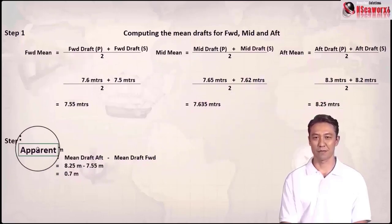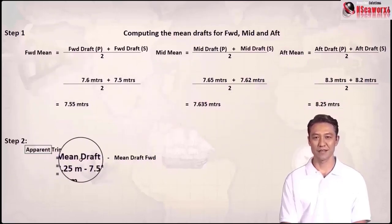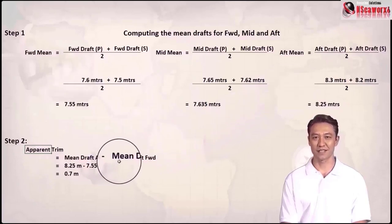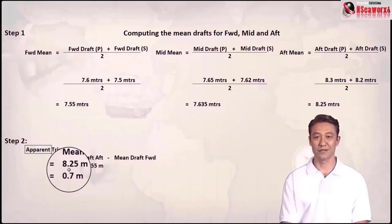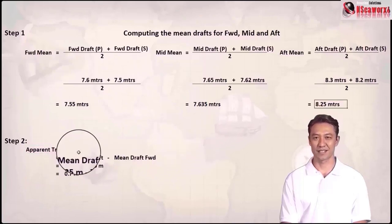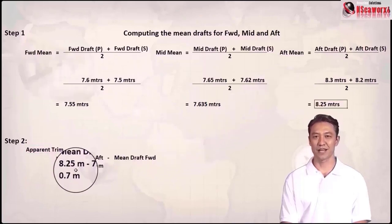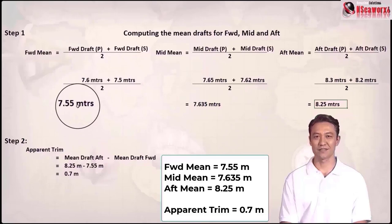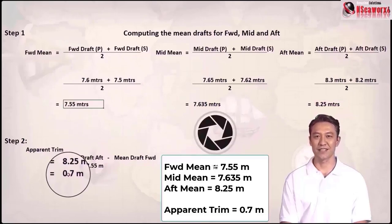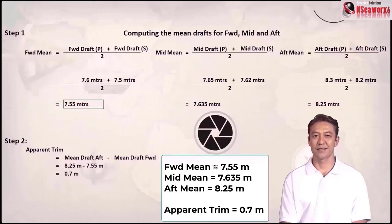Step 2: get the apparent trim. The formula is mean draft aft minus mean draft forward. So aft mean 8.25 meters minus forward mean 7.55 meters gives an apparent trim of 0.7 meters.